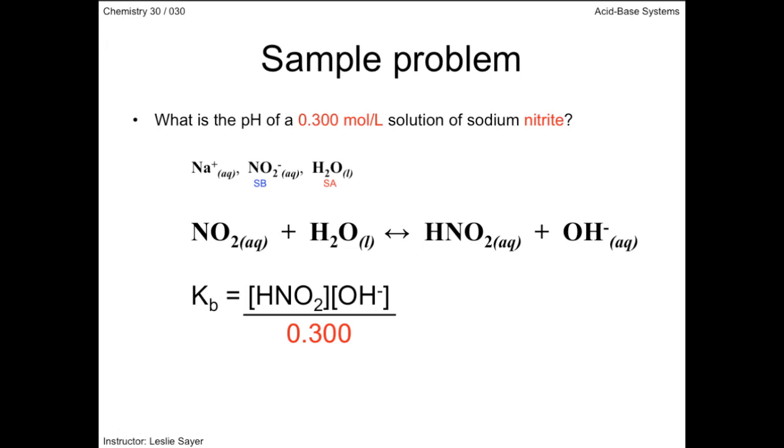The KB for this reaction is derived from the acid ionization constant for nitrous acid, which can be lifted from your data book. The KW divided by the KA for nitrous acid comes to 1.78 times 10 to the negative 11.